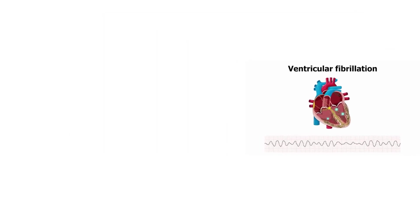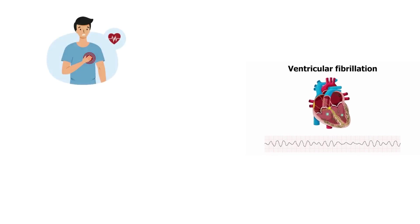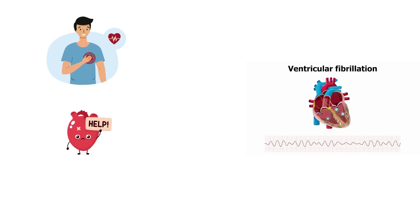The cause of V-Fib isn't always known, but it can occur with certain medical conditions. V-Fib most commonly occurs during an acute heart attack or shortly thereafter. When heart muscle doesn't get enough blood flow, it can become electrically unstable and cause dangerous heart rhythms.